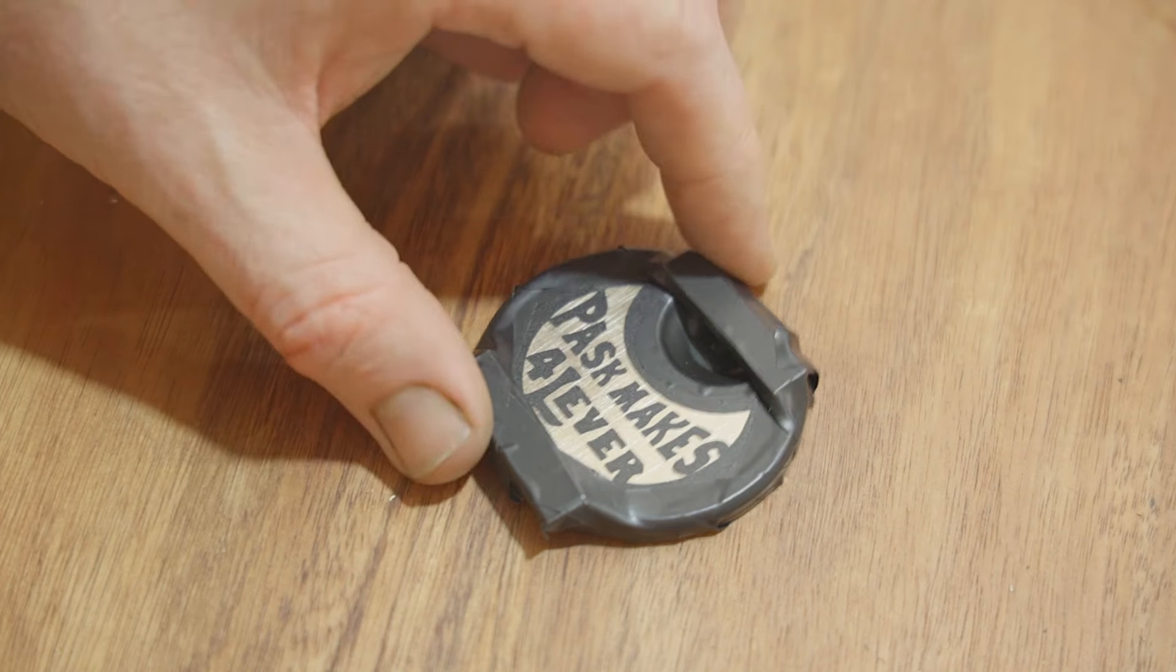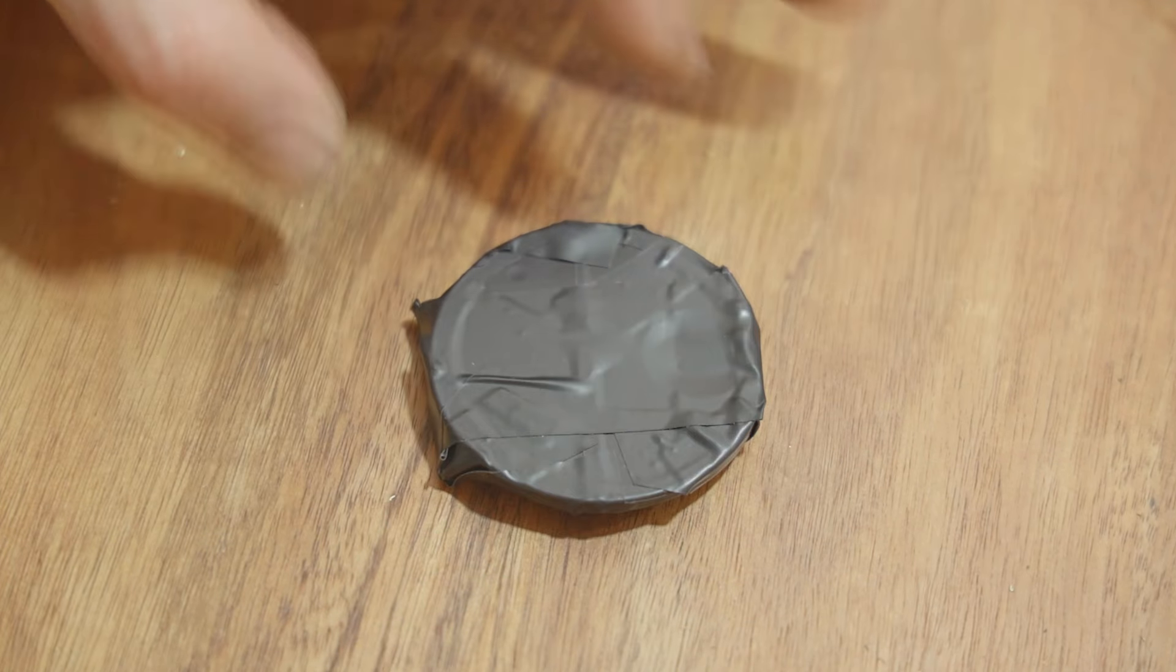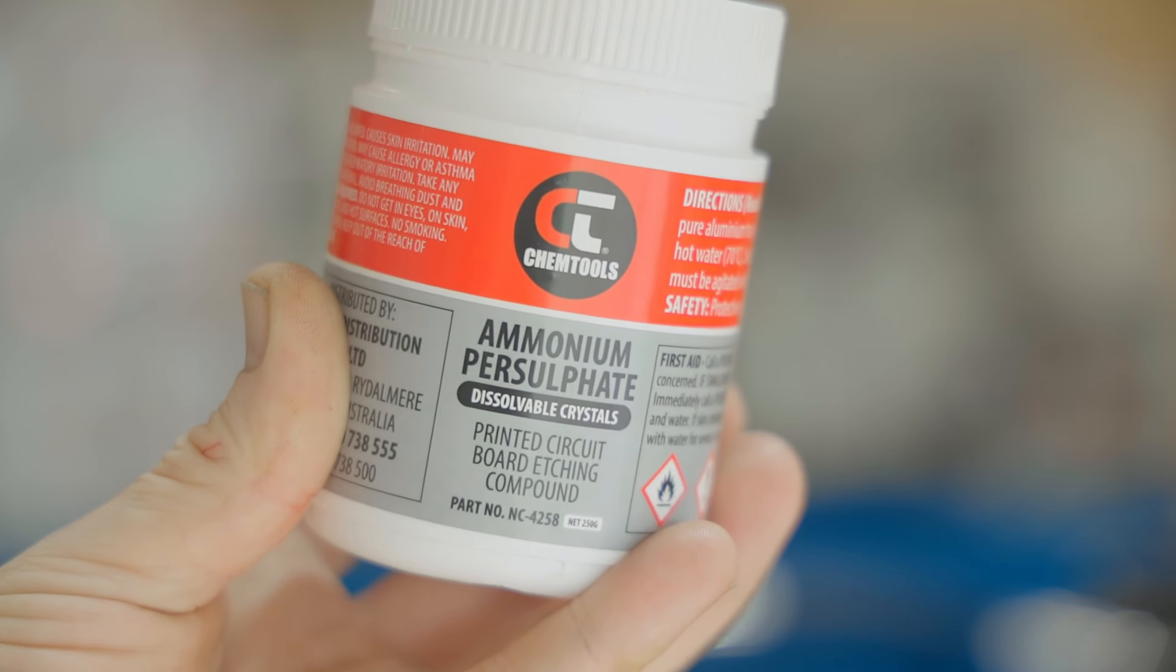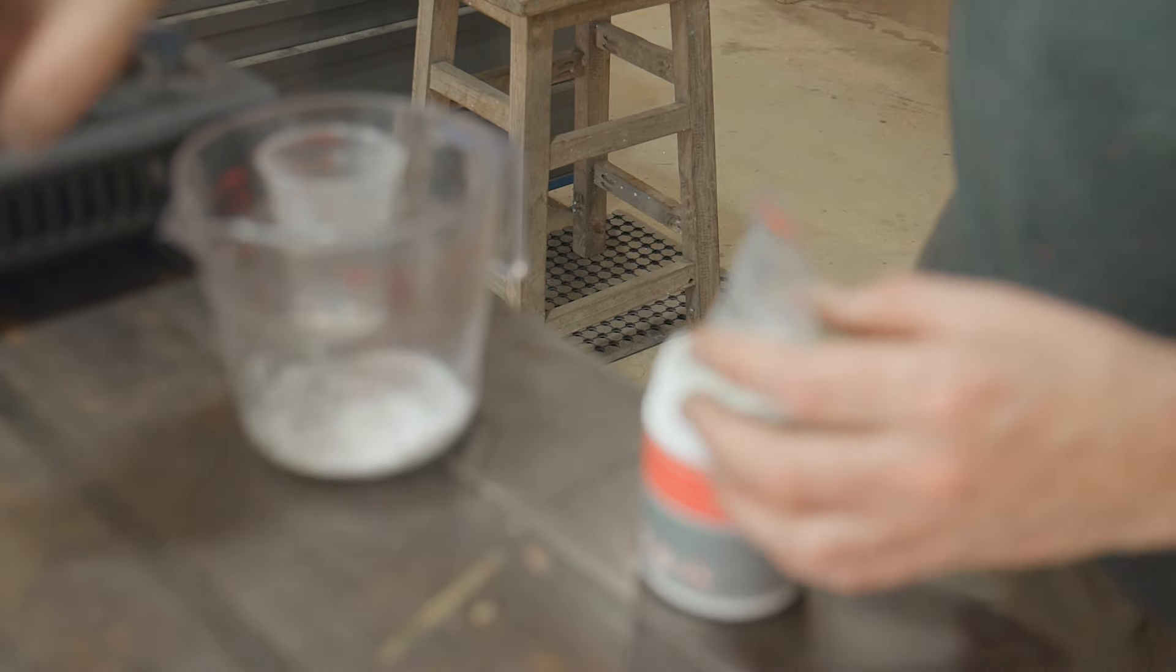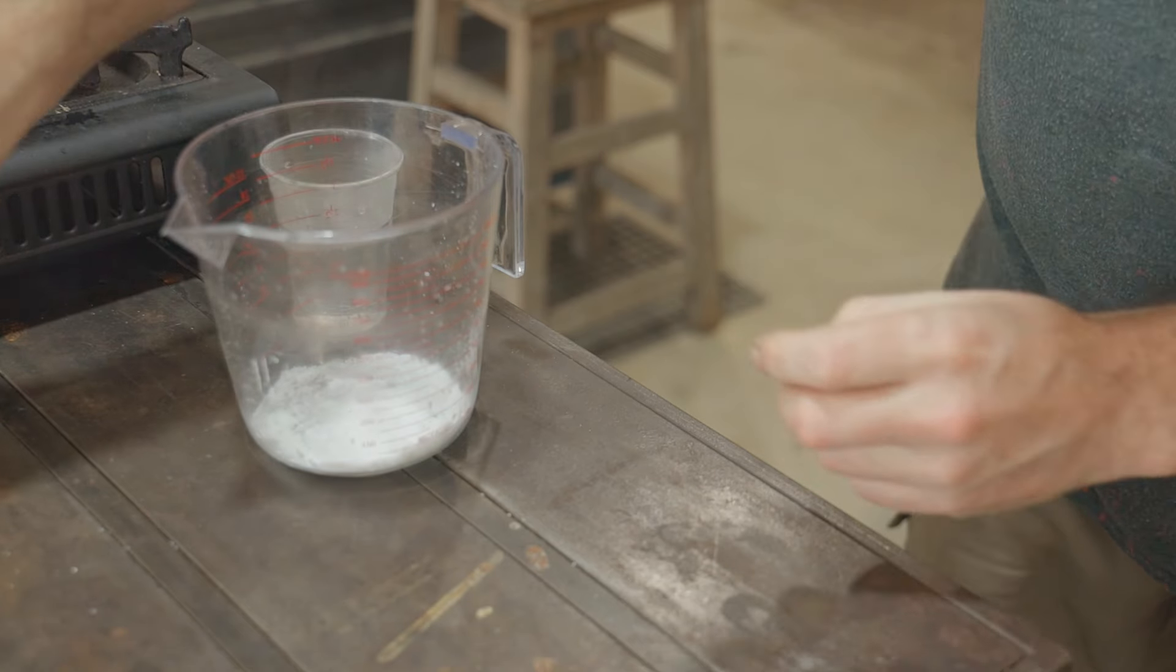I couldn't get any ferric chloride locally but I did find some ammonium persulfate so I'll give that a go instead. It mixes one part etch to five parts water and it has to be heated to around 70 degrees.